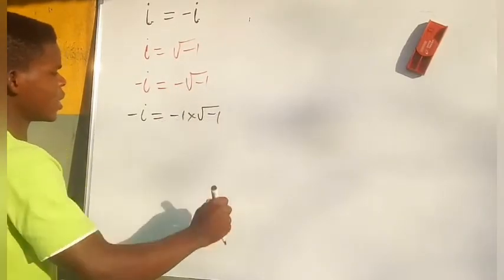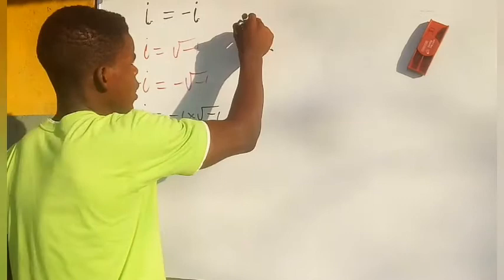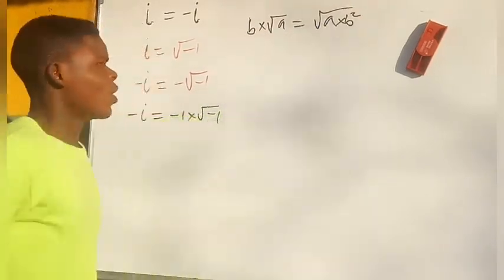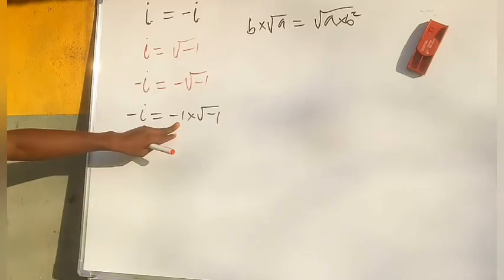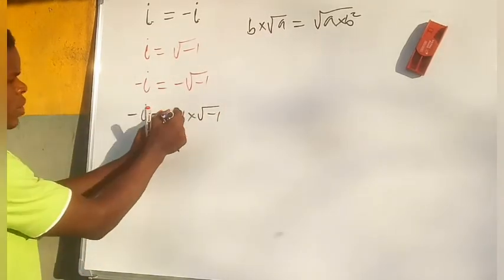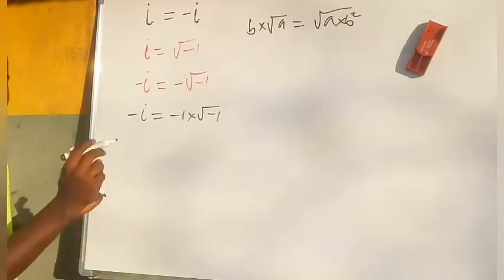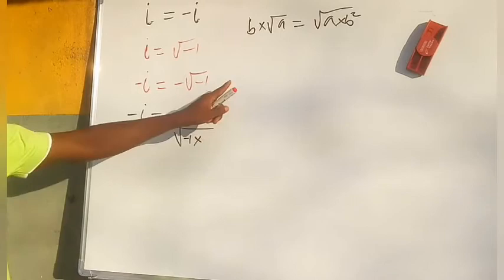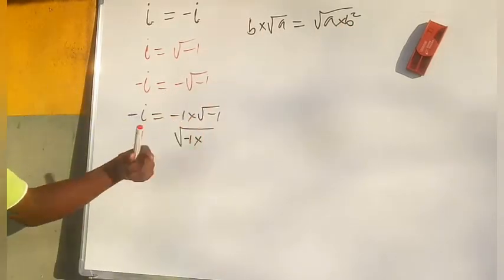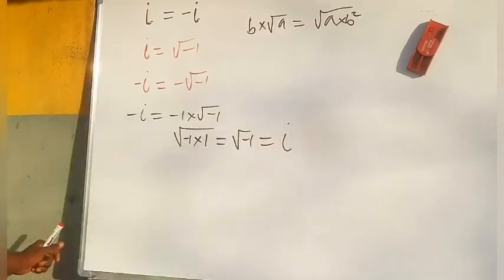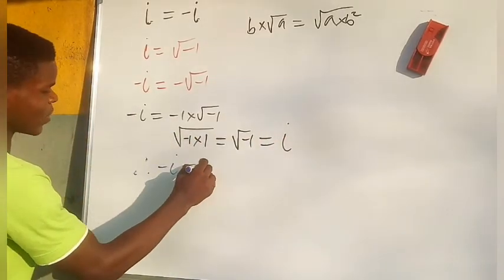Negative i is equal to negative one times square root of negative one. Recall that b times square root of a is the same as square root of a times b squared. In this case, negative one is b, and a and b are the same. Squaring negative one gives square root of negative one, which is equal to i. Therefore, negative i is equal to i.